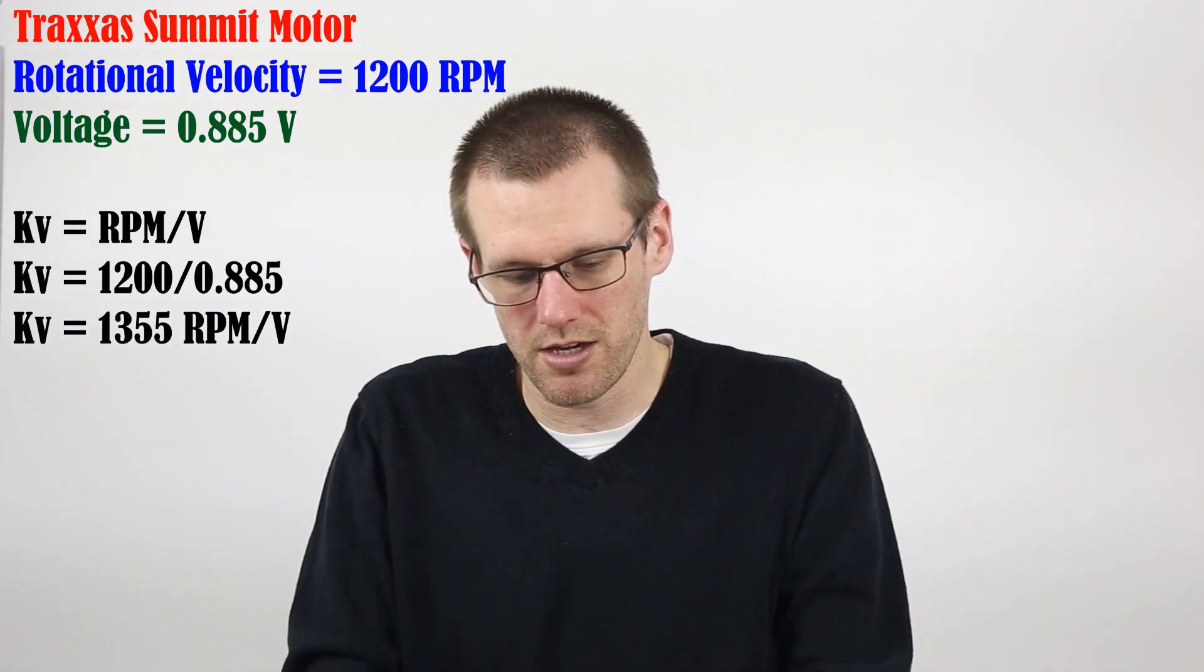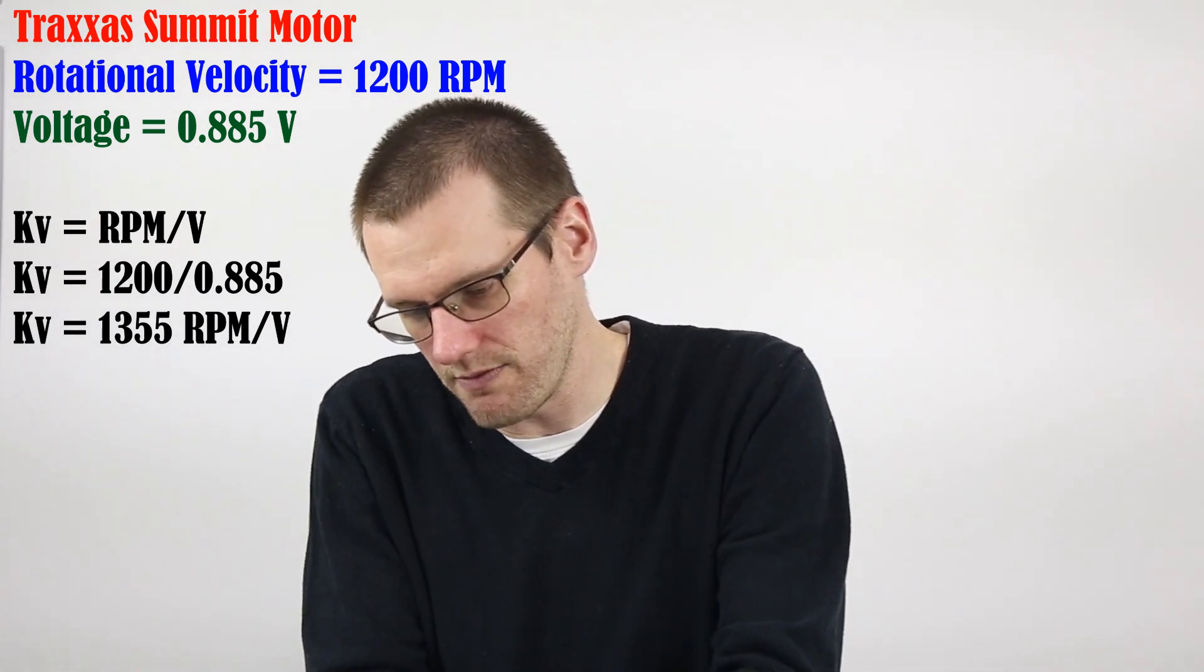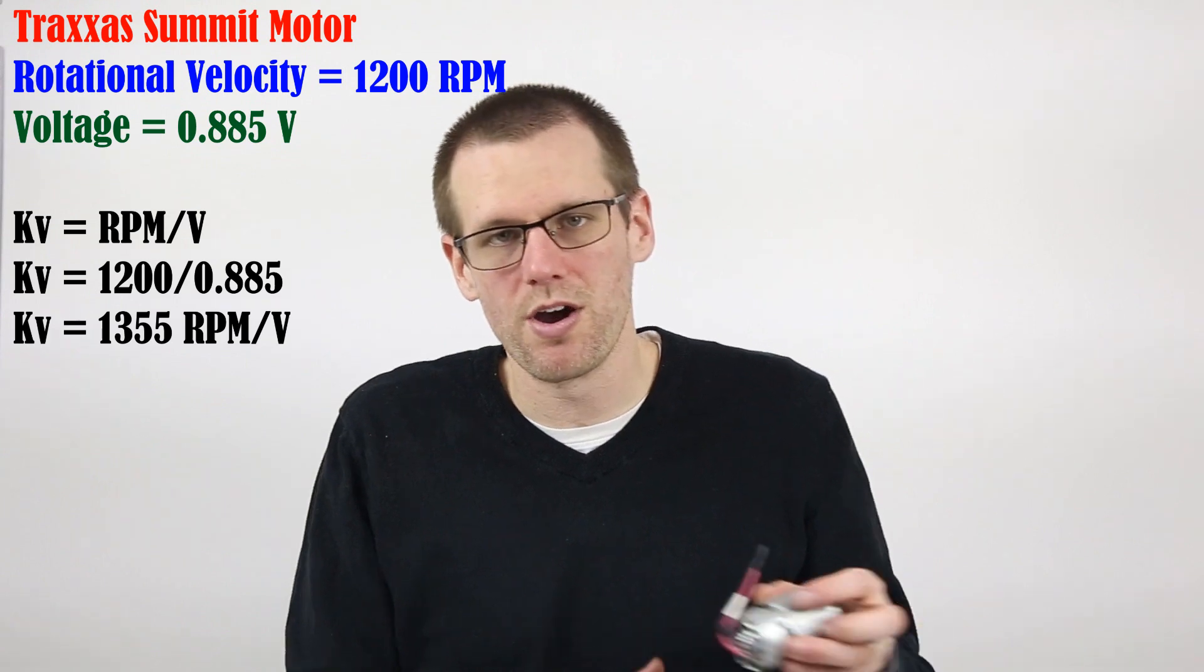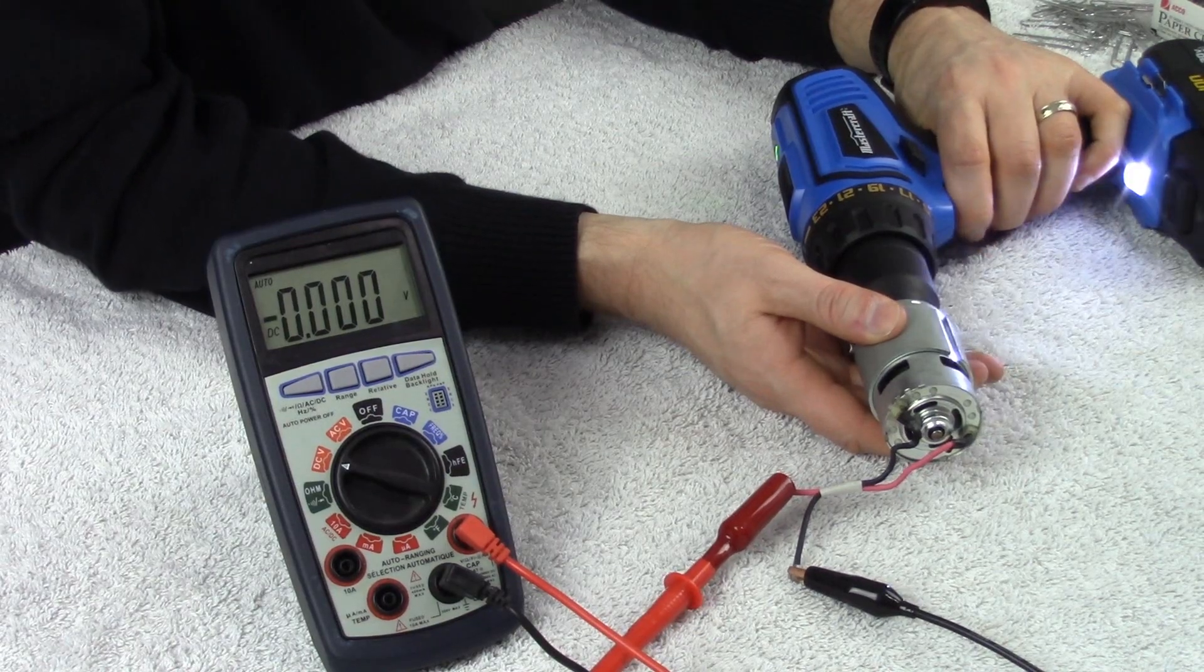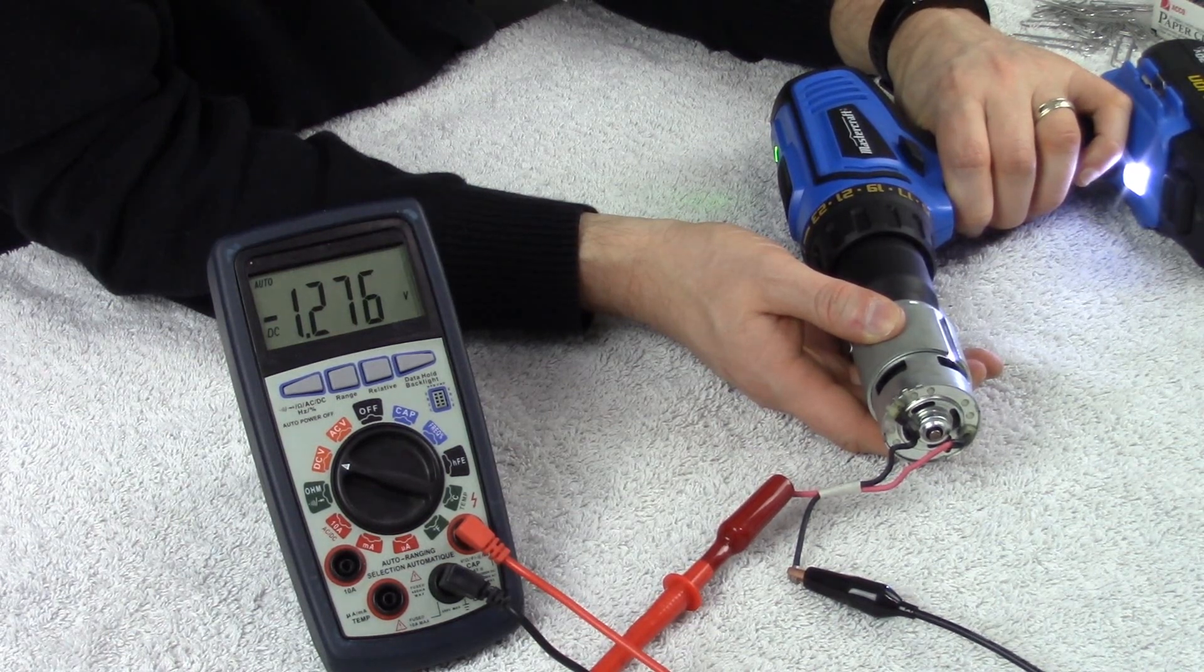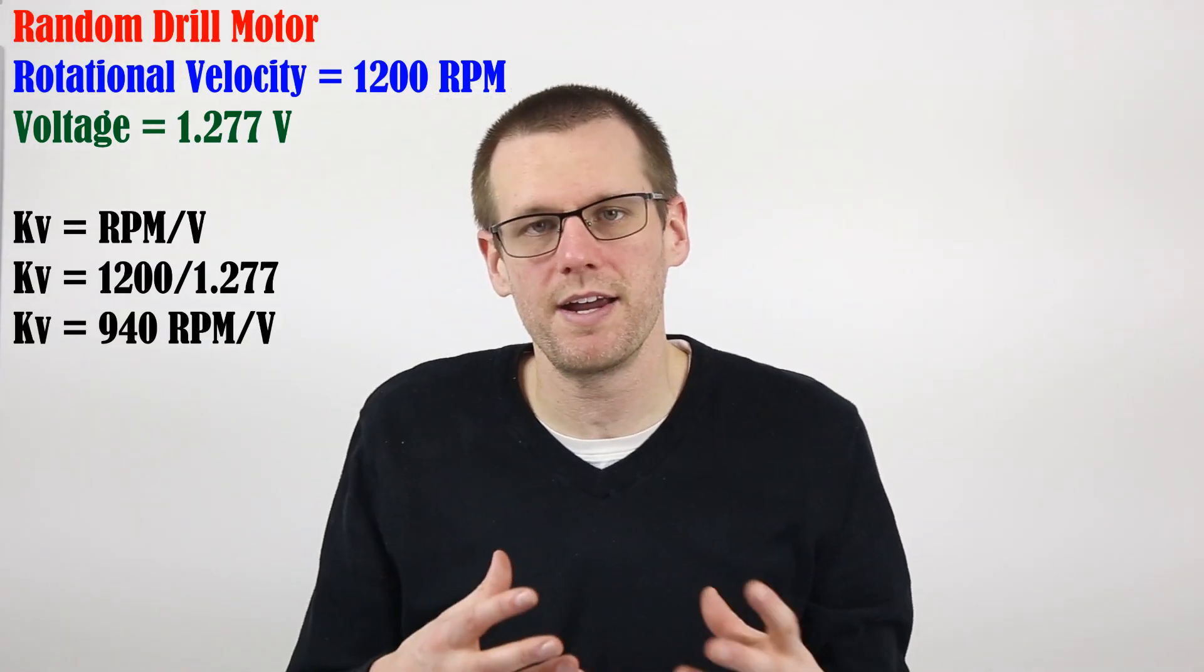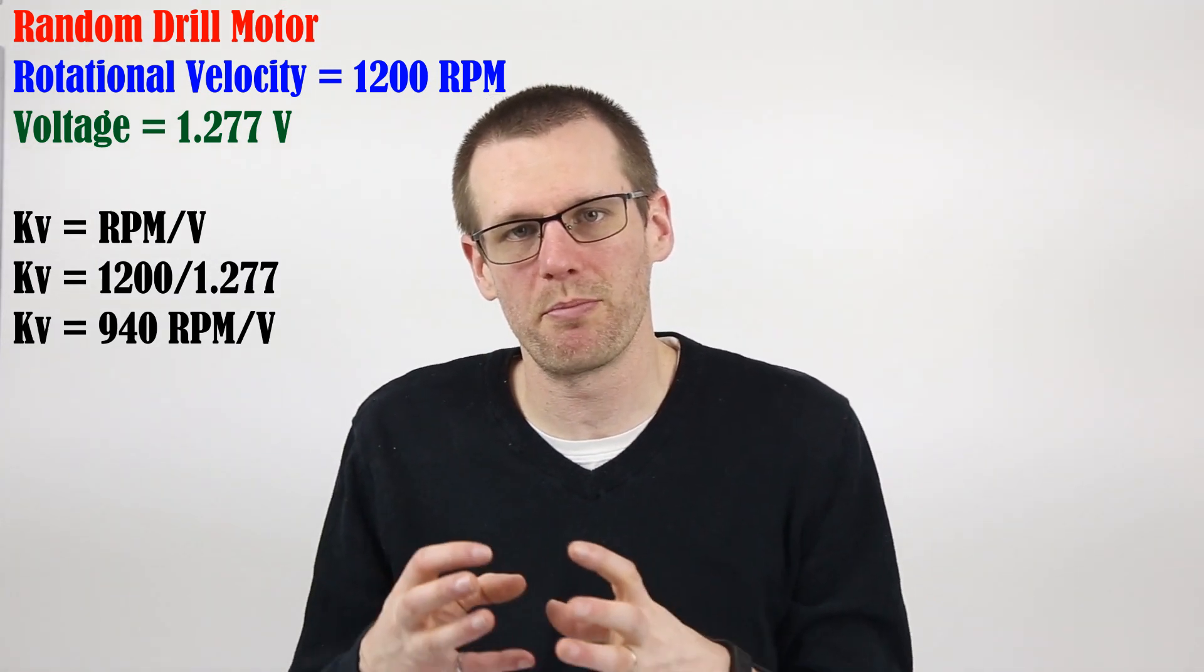Now I'm going to do the exact same thing here on our other motor. We got 0.88 volts on this one. Let's see what we get for the motor that came out of a drill. Now that we have our motor plugged in and we still have our multimeter connected up and set to DC voltage, we can spin up this motor and see what kind of voltage we're getting from this one. So I'll do that, spin it up to full power here. So I'm getting about 1.27 volts here. We take our 1200 and we divide it by 1.27.